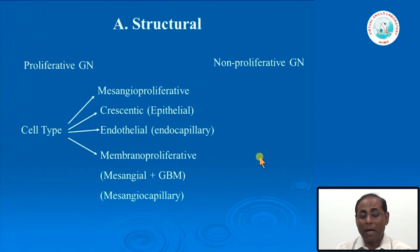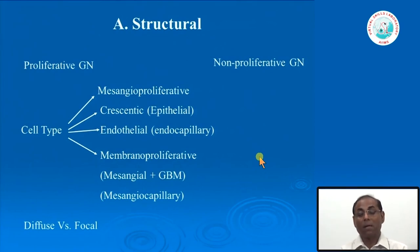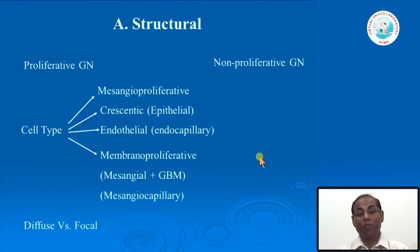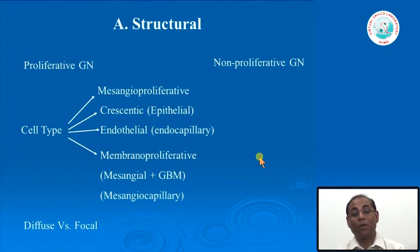According to the integrity-based classification, glomerular disease can cause proliferation of different cells or may not be associated with any proliferation. Structurally, we classify them as proliferative glomerulonephritis and non-proliferative glomerulonephritis. Under proliferative GN, we further sub-classify according to the cell type proliferating: if mesangial cells proliferate, it is mesangial proliferative GN. If epithelial cells proliferate, they usually form crescent-like structures, called crescentic GN.